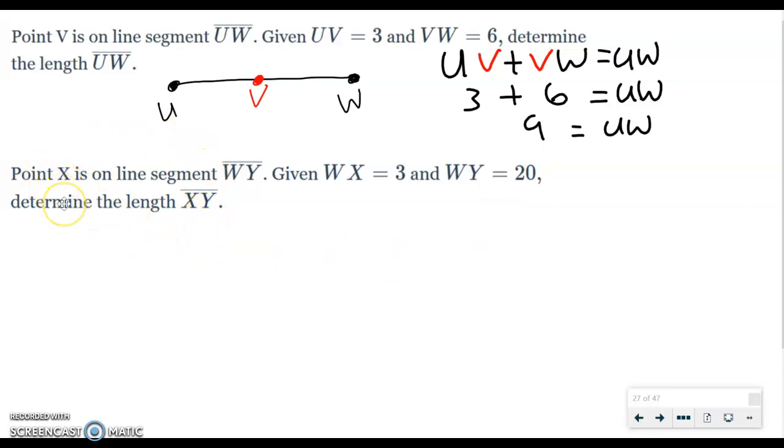I'm going to read this one real quick. Point X is on line segment WY. Given WX is equal to 3 and WY is equal to 20, determine the length of XY. And I want to point out something real quick. Notice how when you put a number with it, it doesn't have the line marking over it.